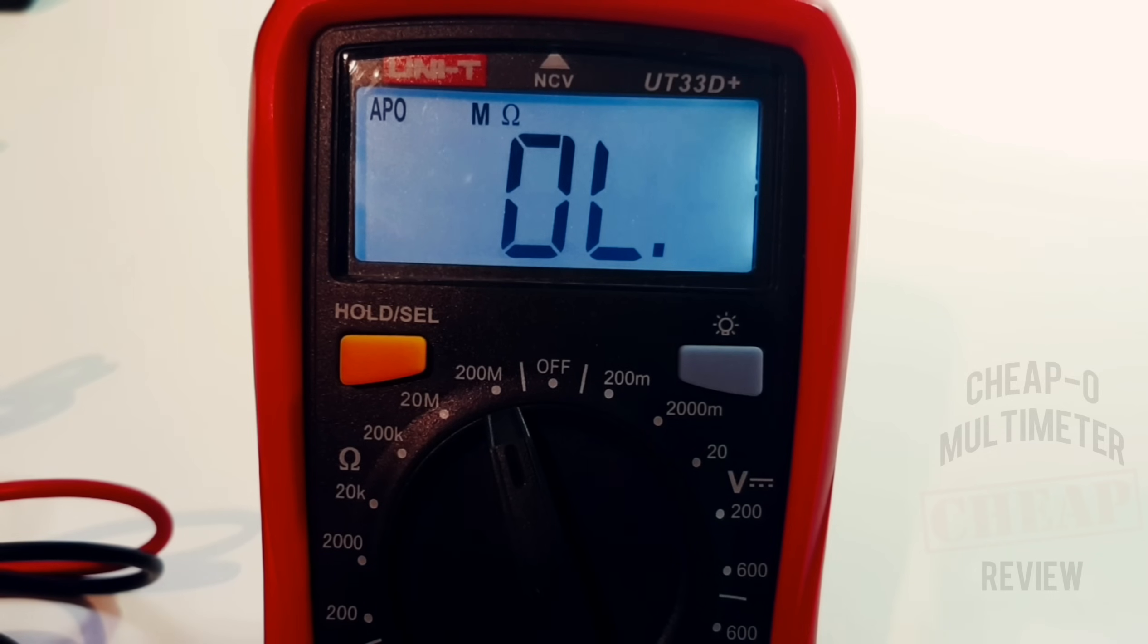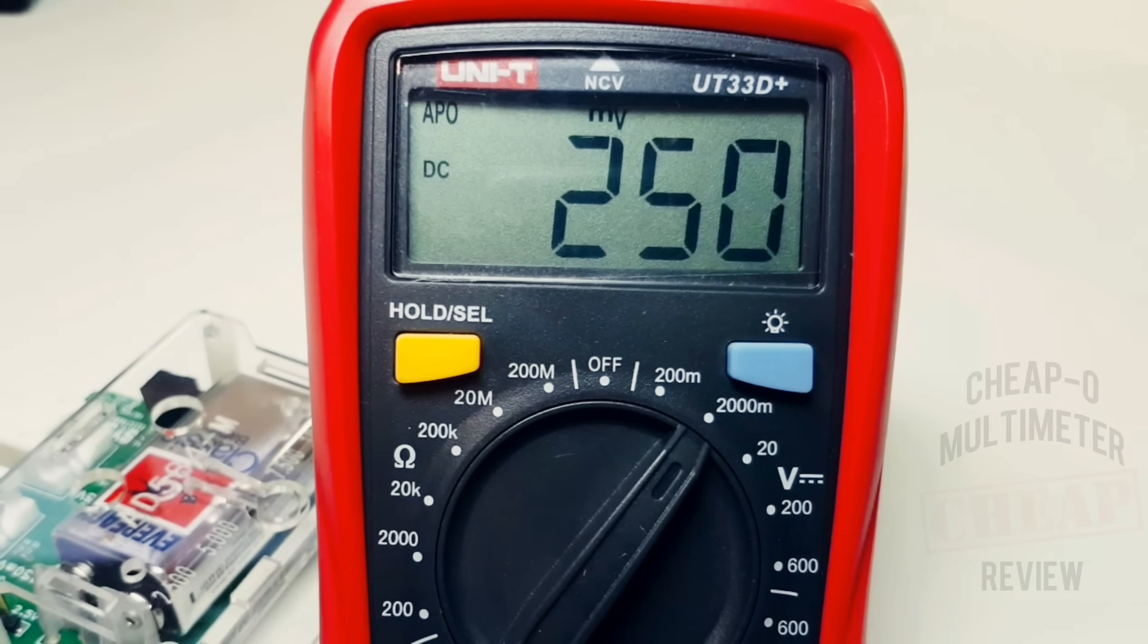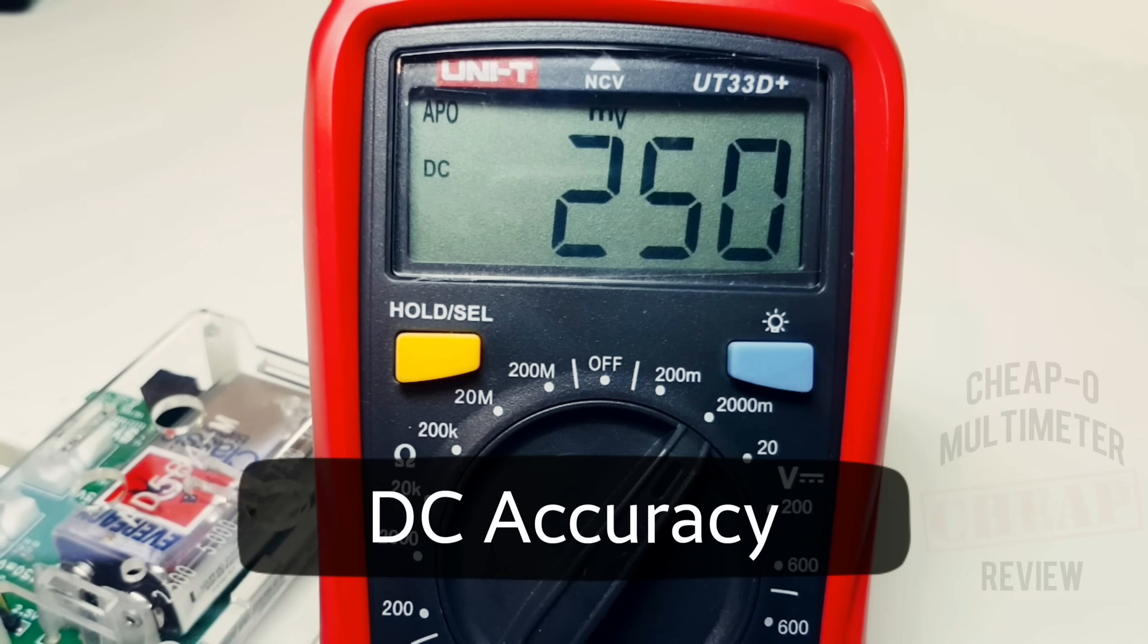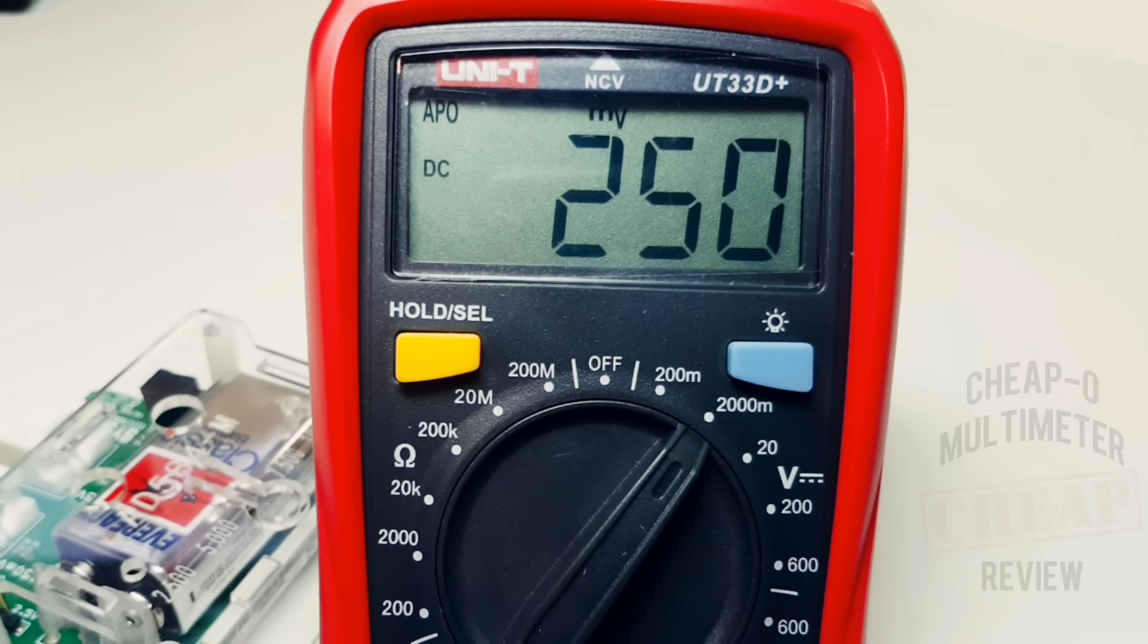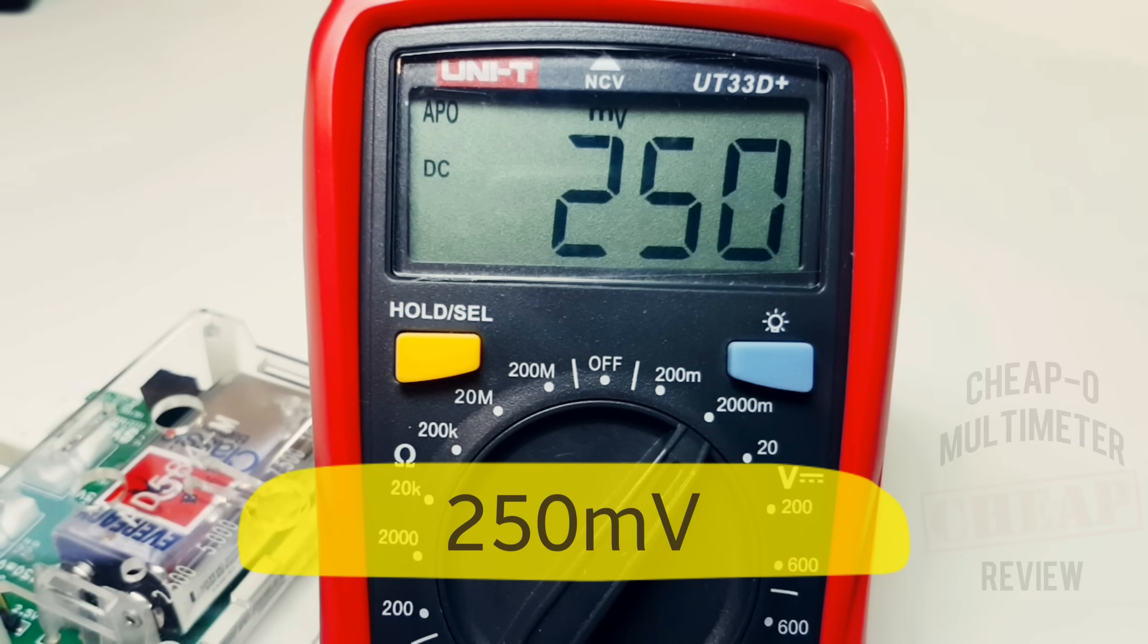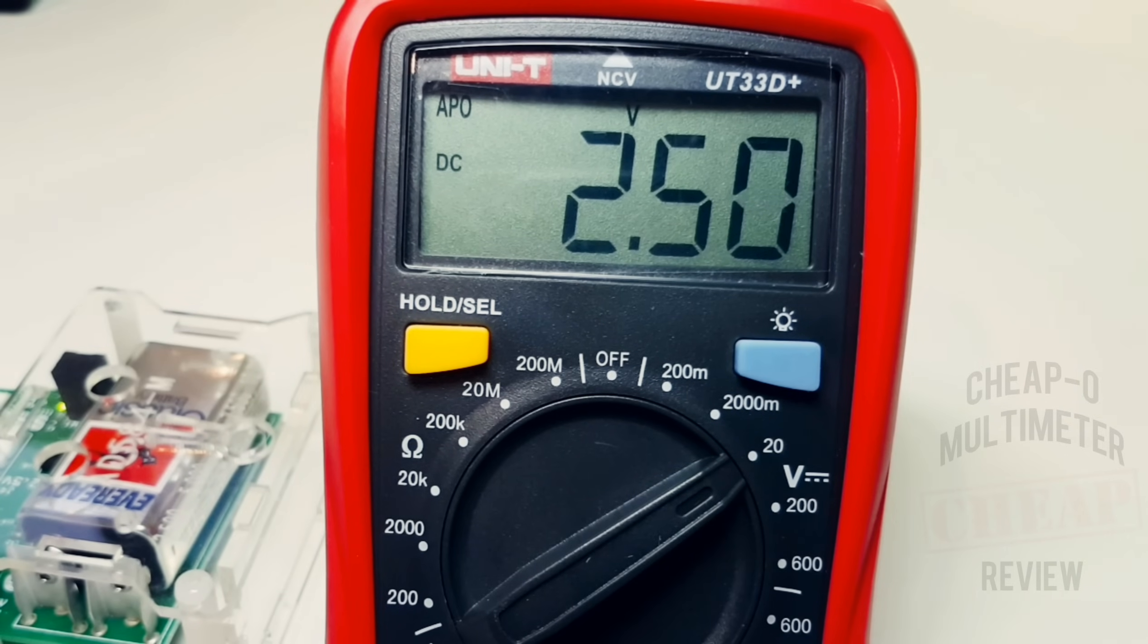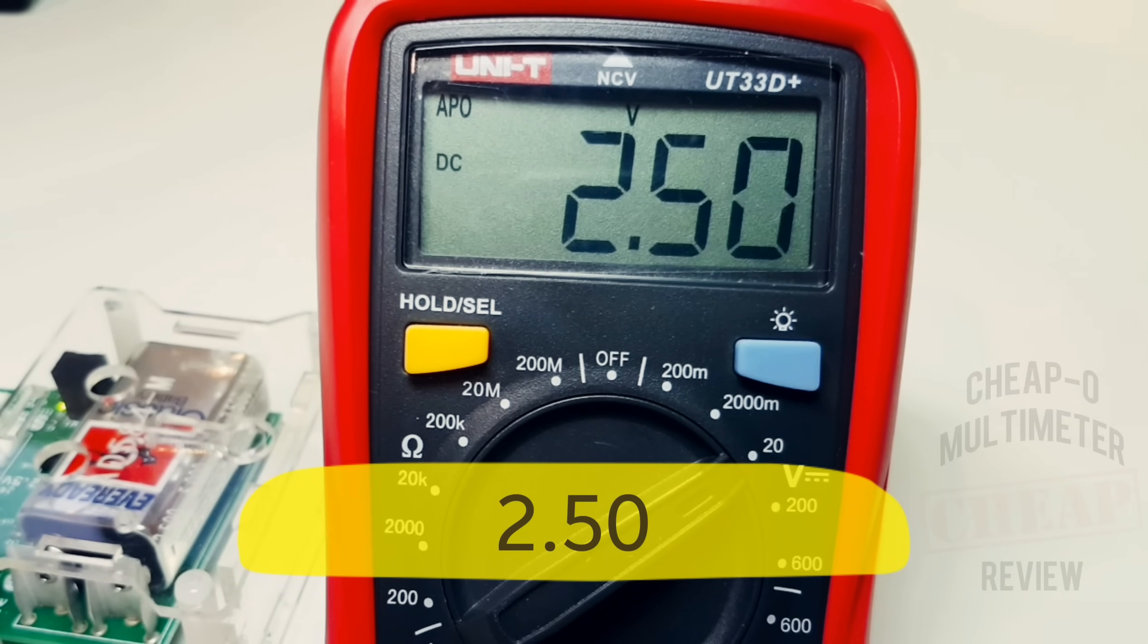Starting off with the DC accuracy test, I have the precision reference hooked up and we should be looking at 250 millivolts. Look at that, spot on: 250. Next up we want to see 2.50 volts, and just what the doctor ordered: spot on. Good job, 33D+.